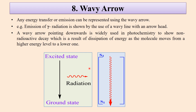Then there is the wavy arrow. The energy transfer or emission can be represented using the wavy arrow, and it is mostly used in photochemistry. Here a molecule or electron comes from an excited state to the ground state with the emission of radiation, shown by the wavy arrow. When a molecule is in a higher singlet state and comes down to the lowest singlet state, the energy released is shown by this wavy arrow. In general, it is used for showing light and radiation.